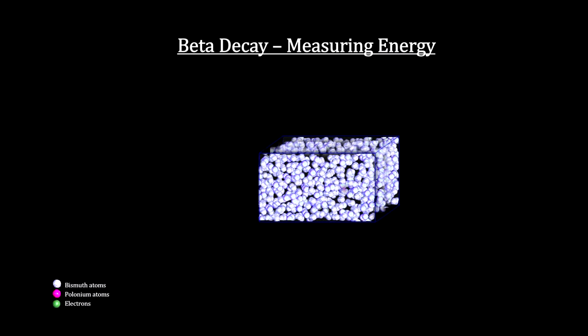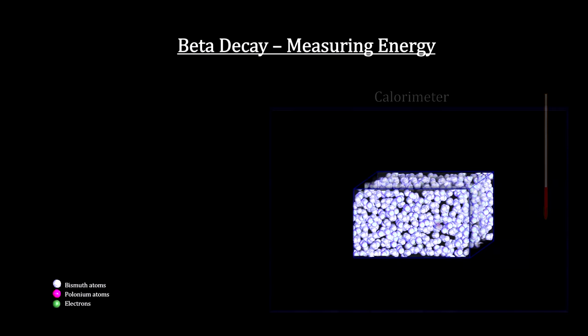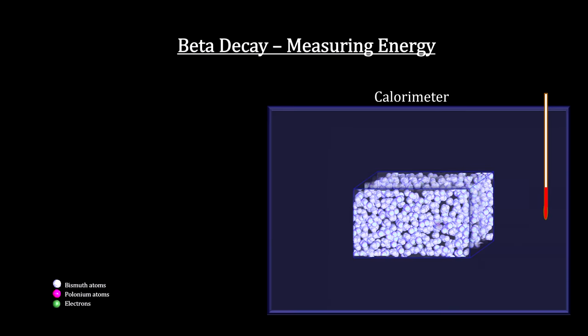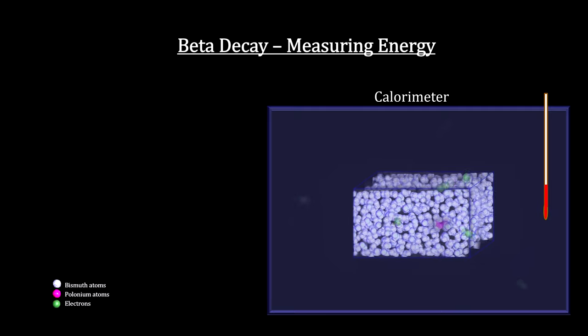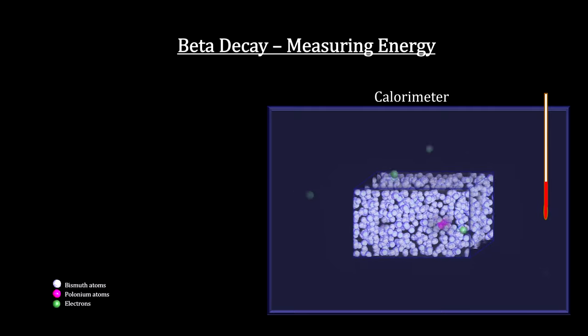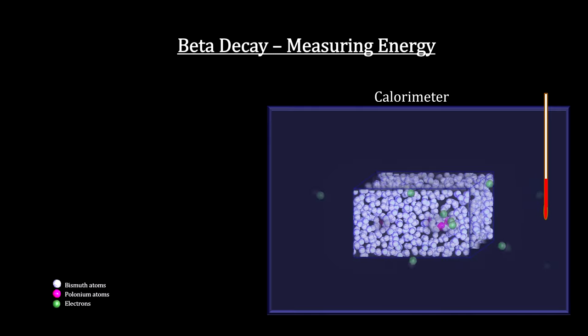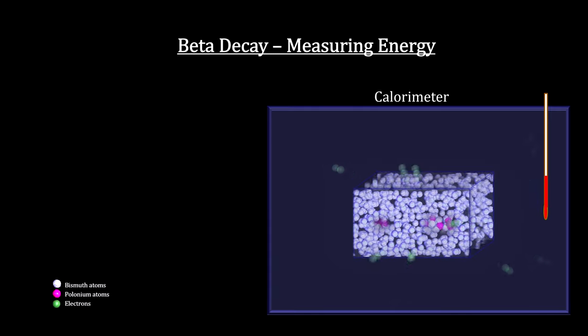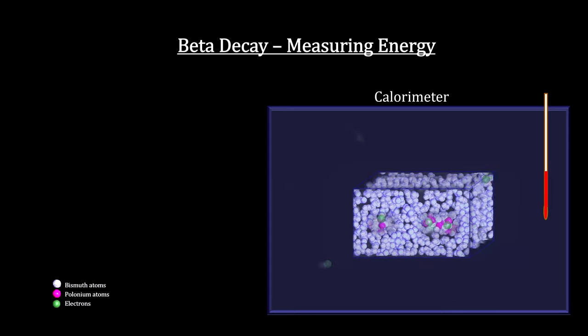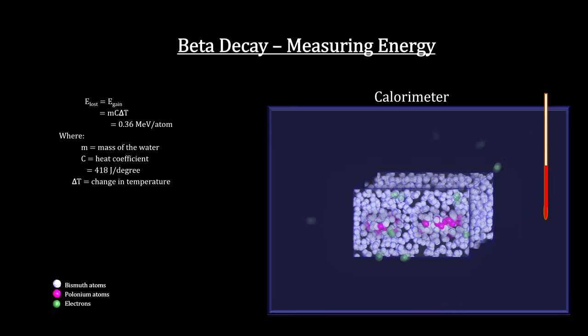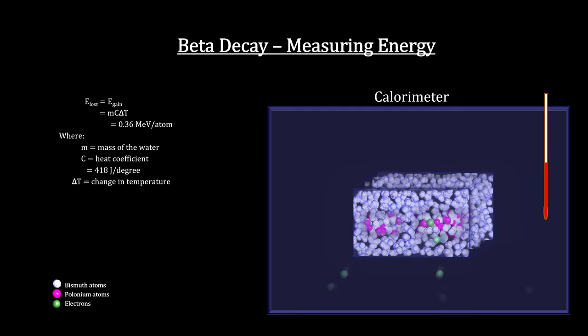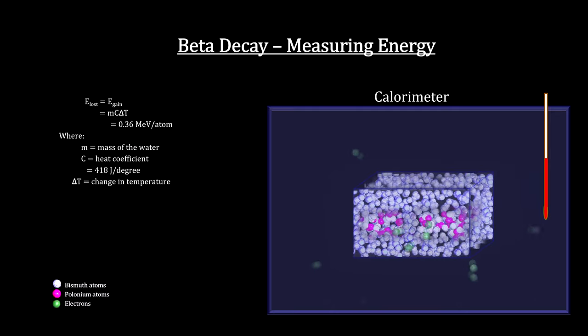The experiment was simple. Place the bismuth into a calorimeter. The calorimeter keeps the energy of the beta radiation inside the container. Over the five days, each and every ejected electron's kinetic energy is converted to heat as they collide with the water molecules and come to rest in the calorimeter. Measuring the change in temperature allows us to calculate the amount of energy absorbed.